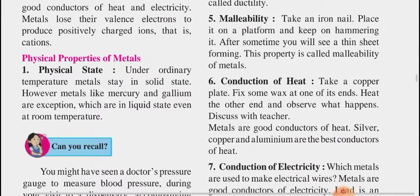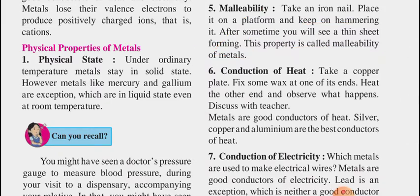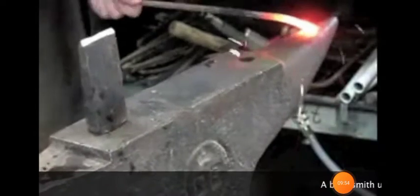The next property is malleability. Take an iron nail, place it on a platform, and keep hammering it. After some time, you will see a thin sheet forming. This property is called malleability of metals. For example, iron roofing sheets have a very flat surface which we use on terraces — hammering the metal spreads it out into a plain, thin sheet.